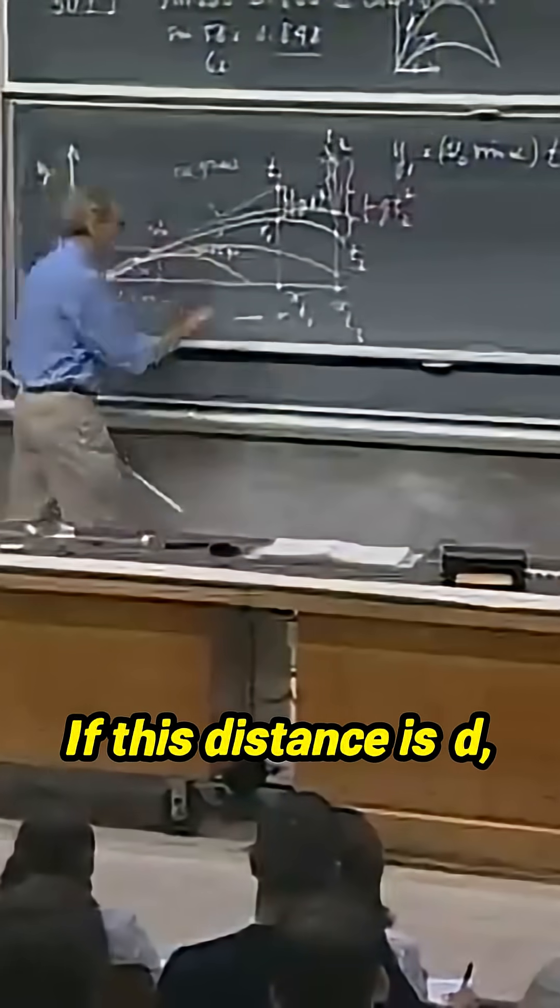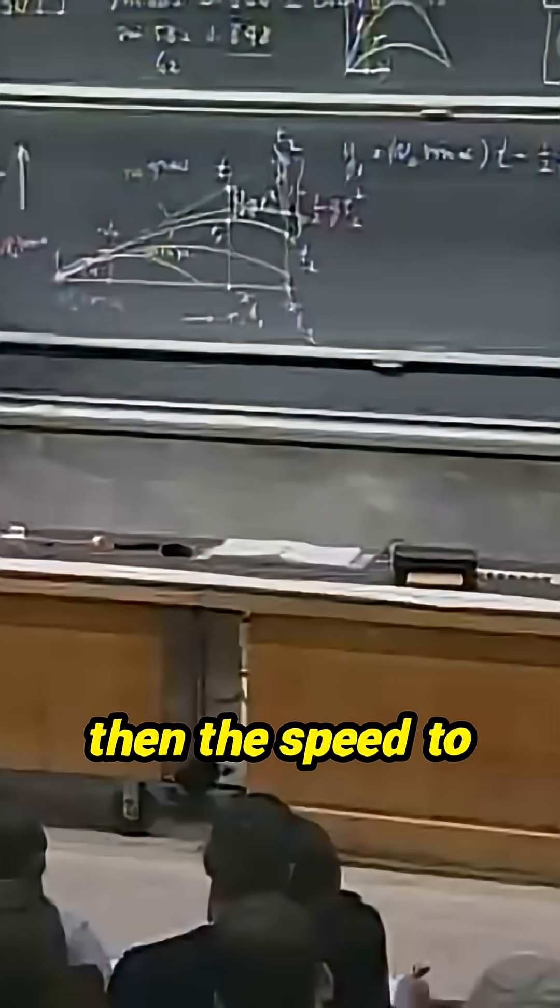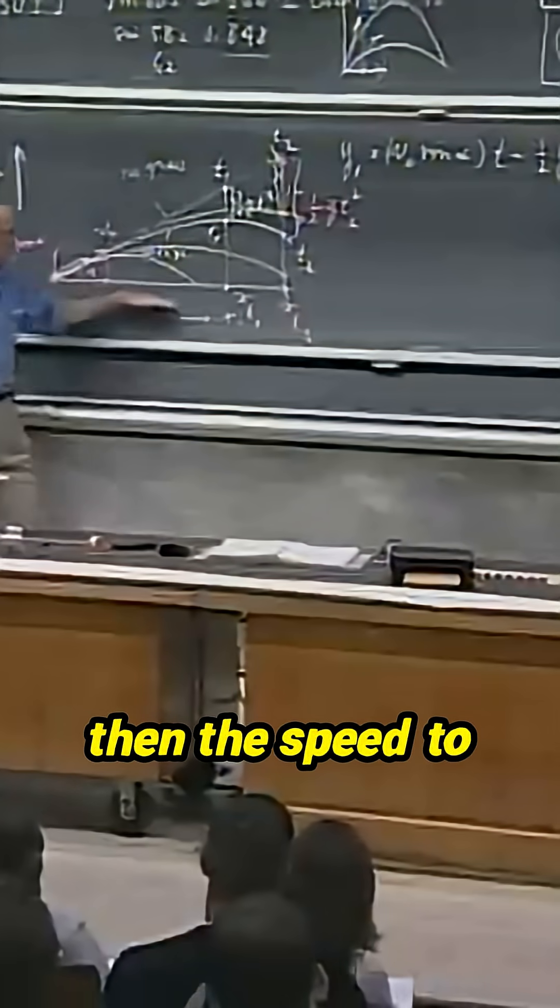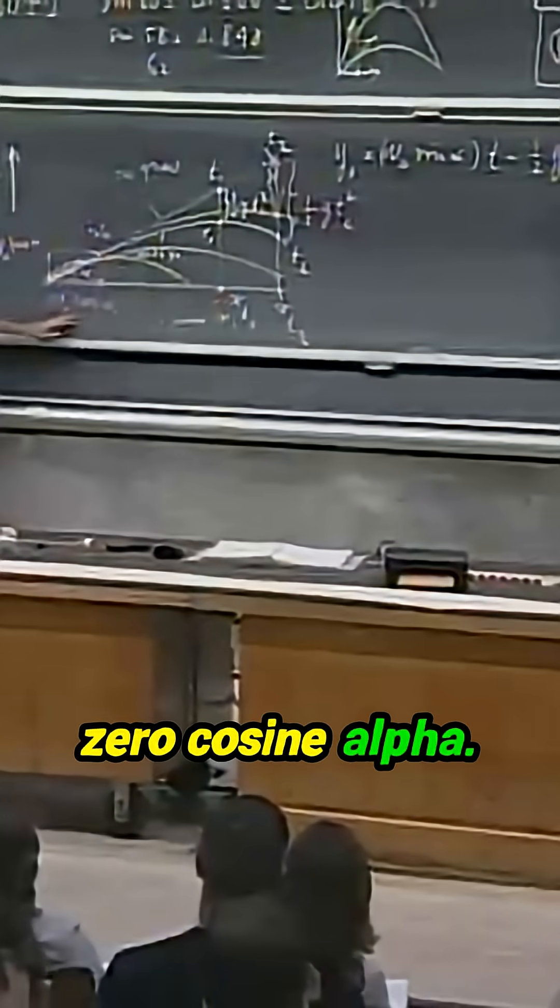If this distance is d, then the speed to reach this point is v zero cosine alpha.